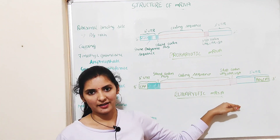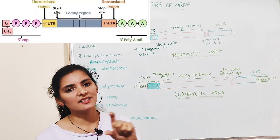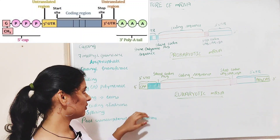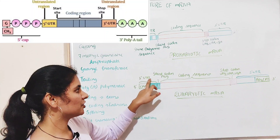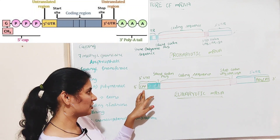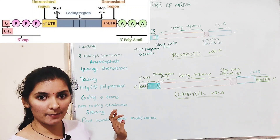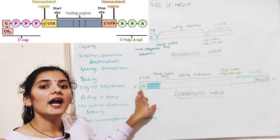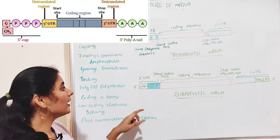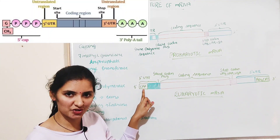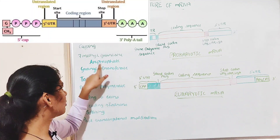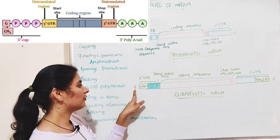Now let me talk about the structure of eukaryotic mRNA. Eukaryotic mRNA is also a single-stranded molecule with two ends: the 5' end and the 3' end. Eukaryotic mRNA consists of many parts: the 5' cap, 5' UTR, coding sequence, 3' UTR, and poly-A tail. The first part is the 5' cap region, present toward the 5' end. This cap is the addition of a modified nucleotide known as 7-methylguanosine triphosphate, added by the enzyme guanyl transferase.